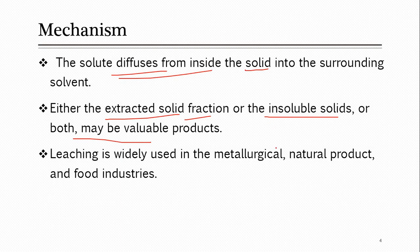Leaching is widely used in various industries, for example metallurgical, natural products, and food industries. For metallurgical applications, it is used for the extraction of ores. One major application is the extraction of uranium — uranium ore from mines is processed using leaching in the nuclear industry. Various techniques are used, some involving acid and some involving base.